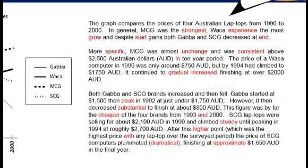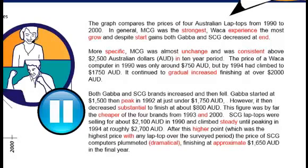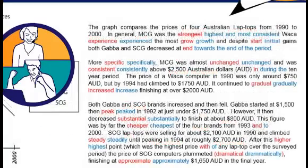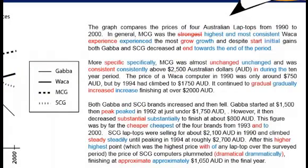Here are the mistakes highlighted. Pause again now and see if you can think what the mistake is and how we should change it. Here are the corrected word forms. Have a look and consider what the errors were. They were generally word form errors, though not all of them — for example, the first one, 'strongest,' is really the wrong kind of word rather than the wrong word form.